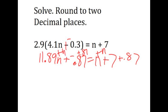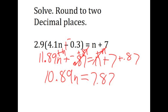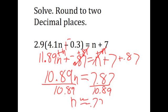11.89n plus a negative 1n is 10.89n. Those mark out, property of opposites. 7 plus 0.87 is 7.87. Once again, the calculator does the dirty work here as we divide both sides by 10.89. We get n is approximately equal to 0.72 because we're rounding to two decimal places. We're almost done.